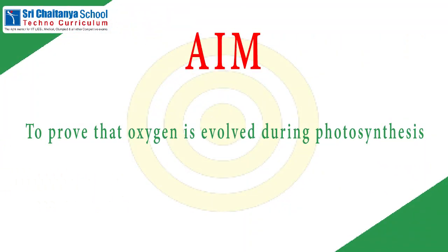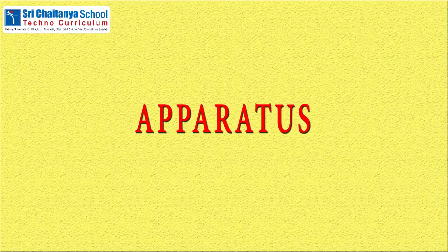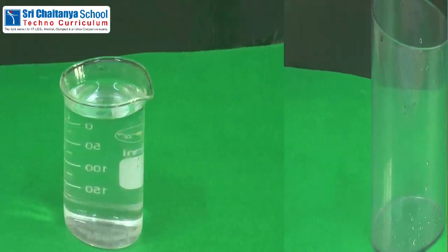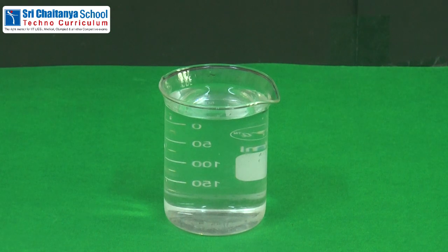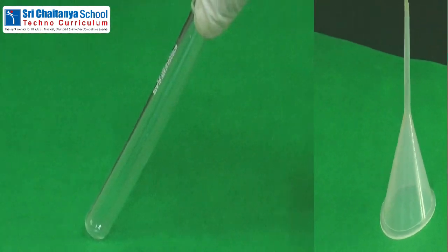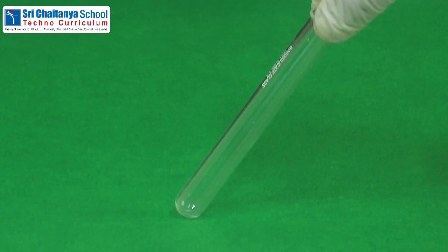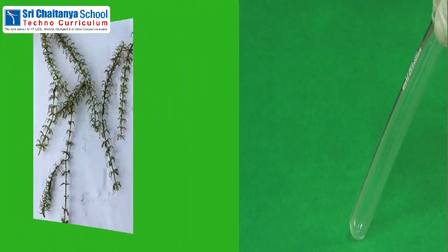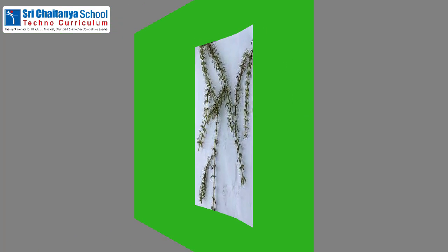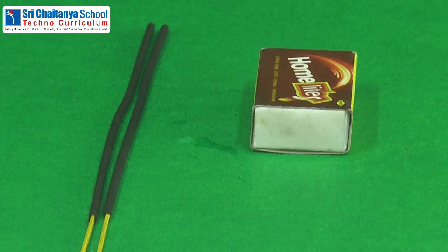The aim of this experiment is to prove that oxygen is evolved during photosynthesis. The apparatus required to do this experiment are: a beaker, water, a funnel, a test tube, hydrilla plants, an incense stick, and a matchbox.